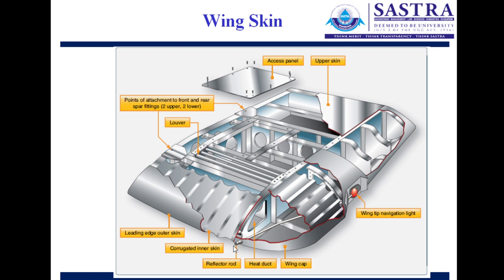Other visible wing features include a deflector rod, a wingtip navigation light, and an access panel that can be removed. The box-like structure visible inside is used for storing fuel.